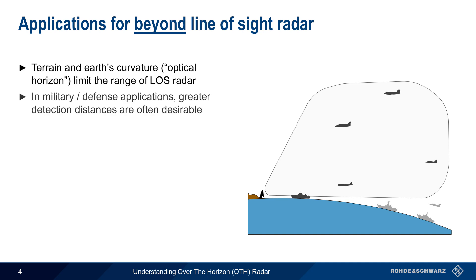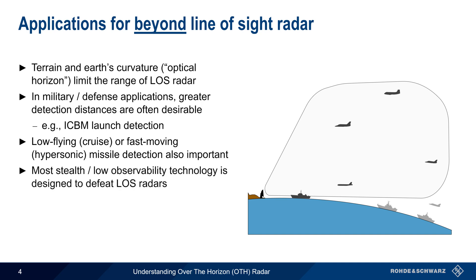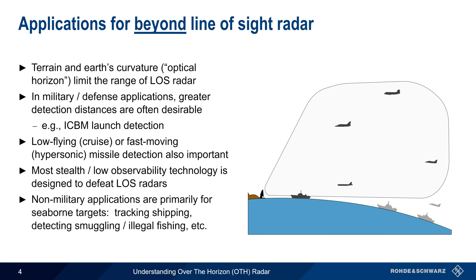In military and defense applications, the ability to detect targets at greater distances is often desirable. A well-known example of this is detecting the launch of an intercontinental ballistic missile. More recently, the detection of low-flying cruise missiles and fast-moving hypersonic missiles has also increased in importance. It's worth noting that most stealth or low-observability technology is normally intended to defeat line-of-sight radars. There are also non-military applications for beyond line-of-sight radar, primarily for seaborne targets such as detecting smugglers, illegal fishing operations, etc.